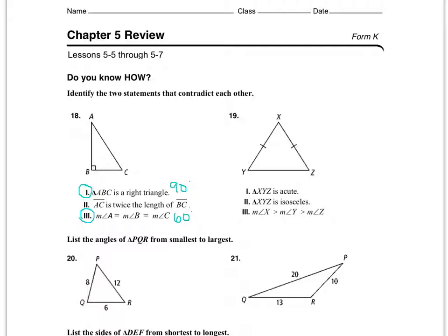Moving on to question 19. Statement one says the triangle is acute. Statement two says the triangle is isosceles. Statement three says the measure of angle X is greater than angle Y, which is greater than angle Z. In an isosceles triangle, two angles are congruent — as shown in the picture. But statement three says none of the angles are congruent, since X is greater than Y is greater than Z. So statements 2 and 3 are contradicting each other.